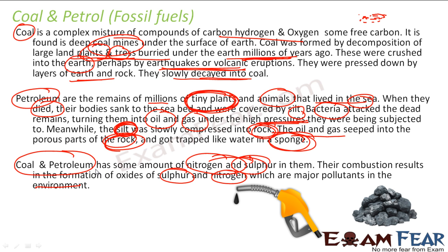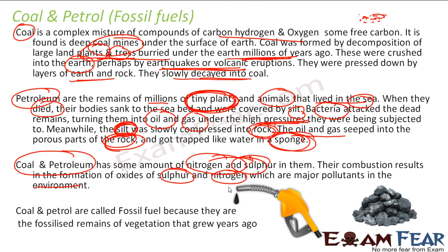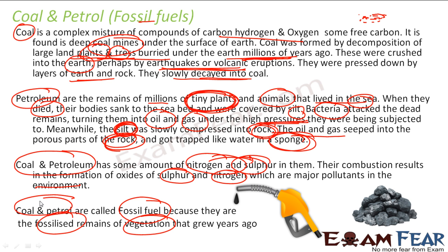Sulfur oxides and nitrogen oxides are the ones which pollute the environment the most. The first question we asked was: why are they called fossil fuels? They are called fossil fuels because they are the fossilized remains of vegetation that grew millions of years ago. The plants and animals got fossilized and we got coal and petrol — and that's why they are called fossil fuels.